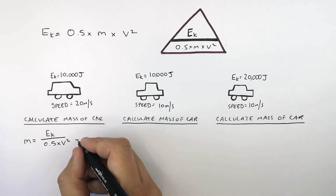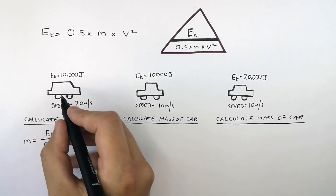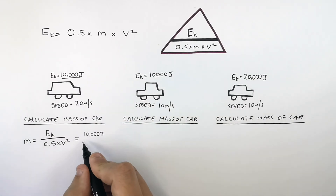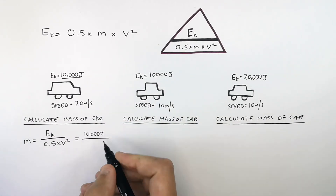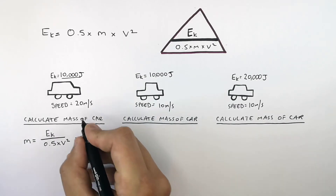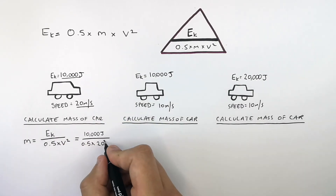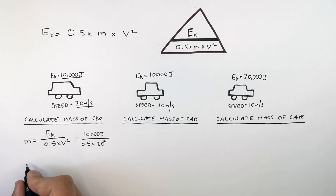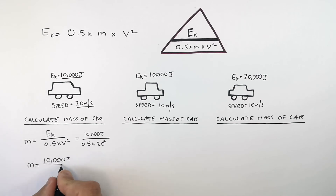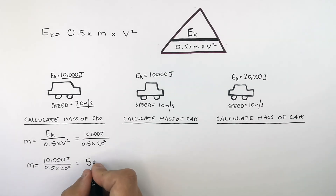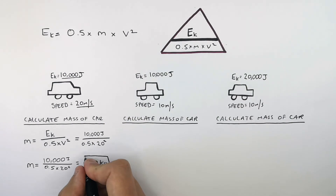So now you can substitute in the numbers. Kinetic energy here is 10,000 joules divided by 0.5 times the speed 20. But remember, it's 20 squared. M equals 10,000 divided by 0.5 times 20 squared, which gives you a mass of 50 kilograms.